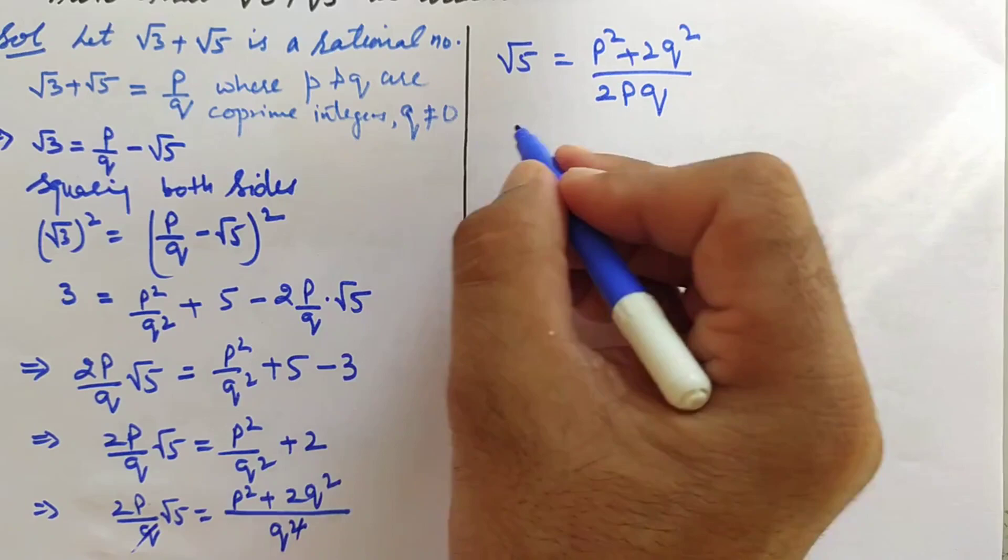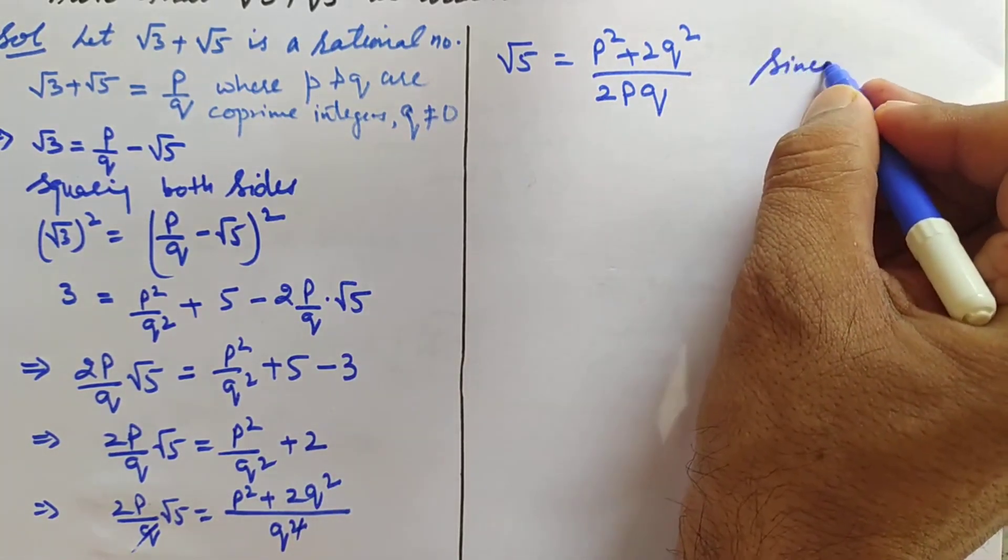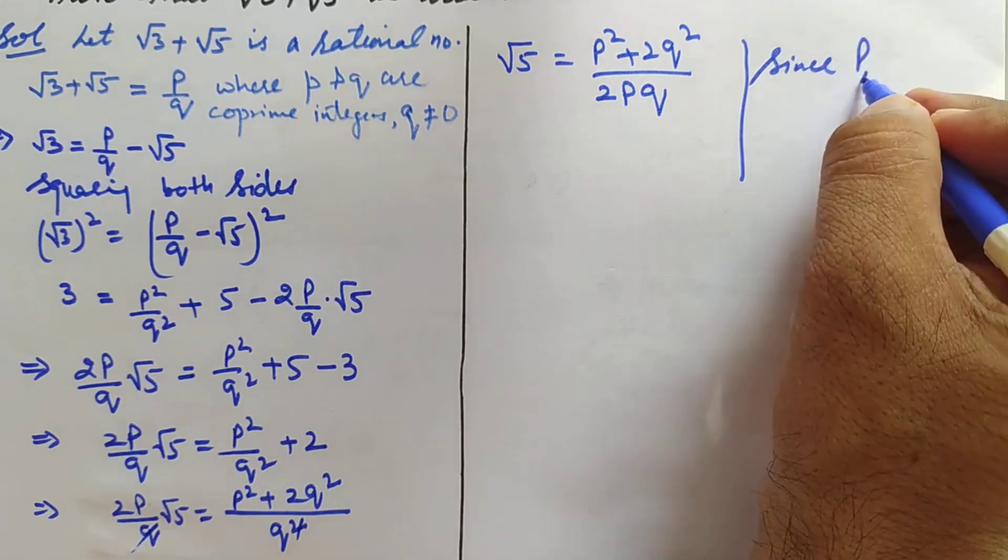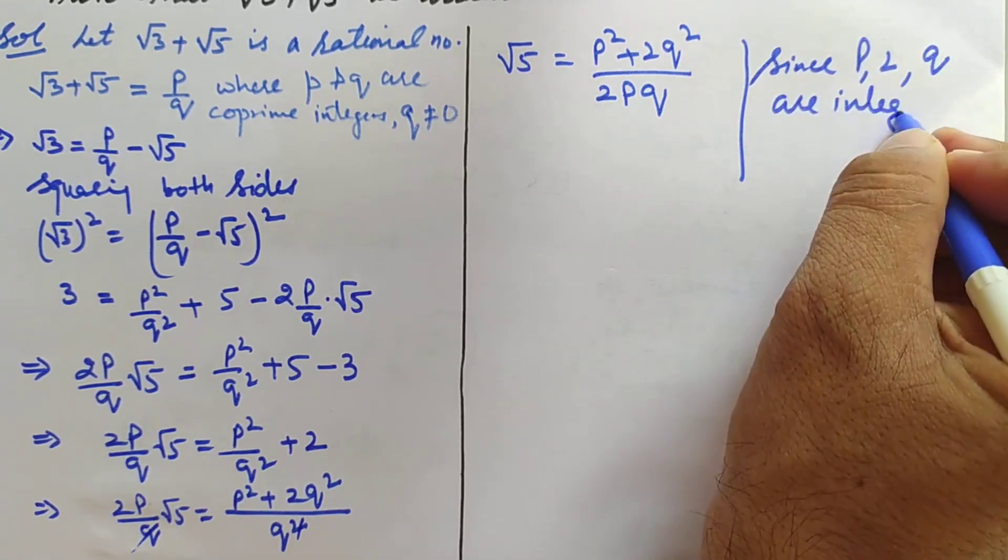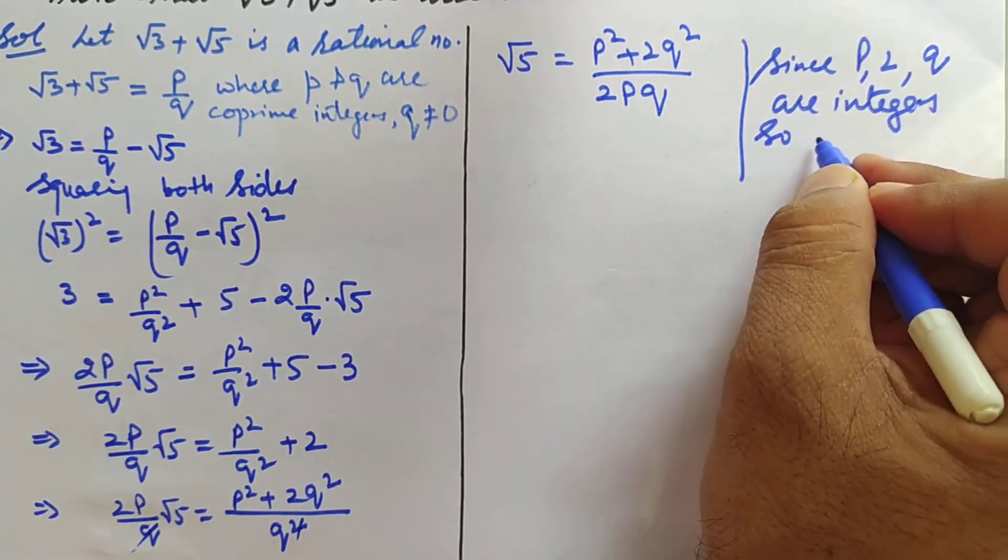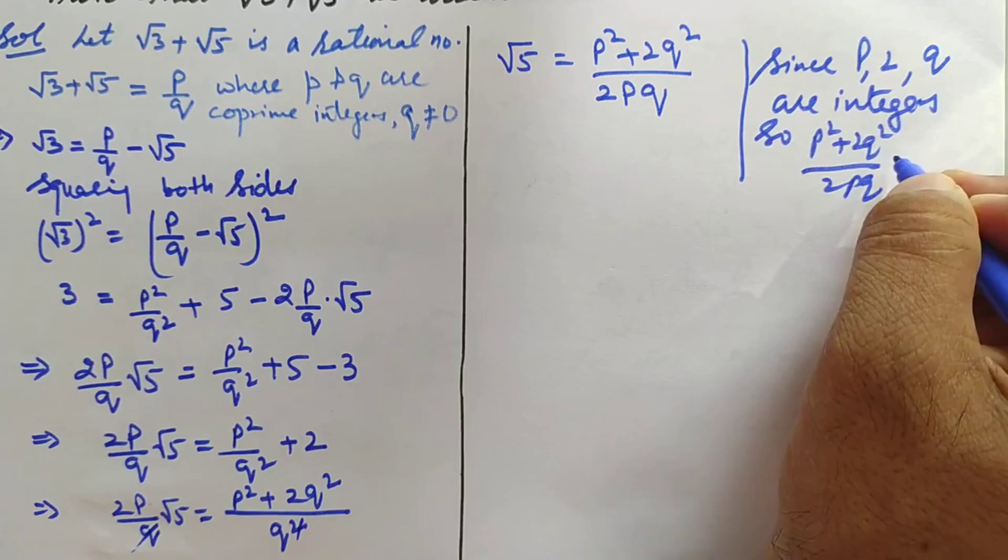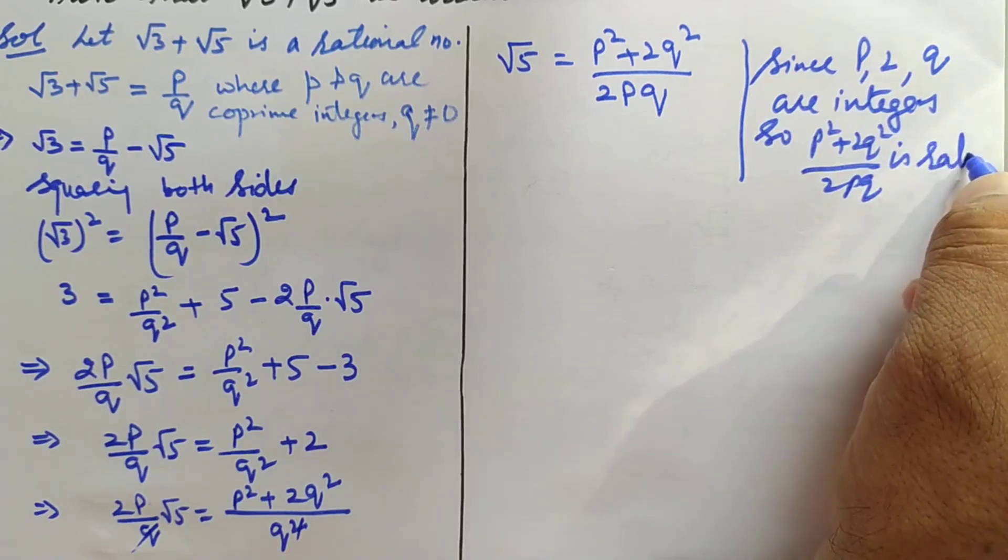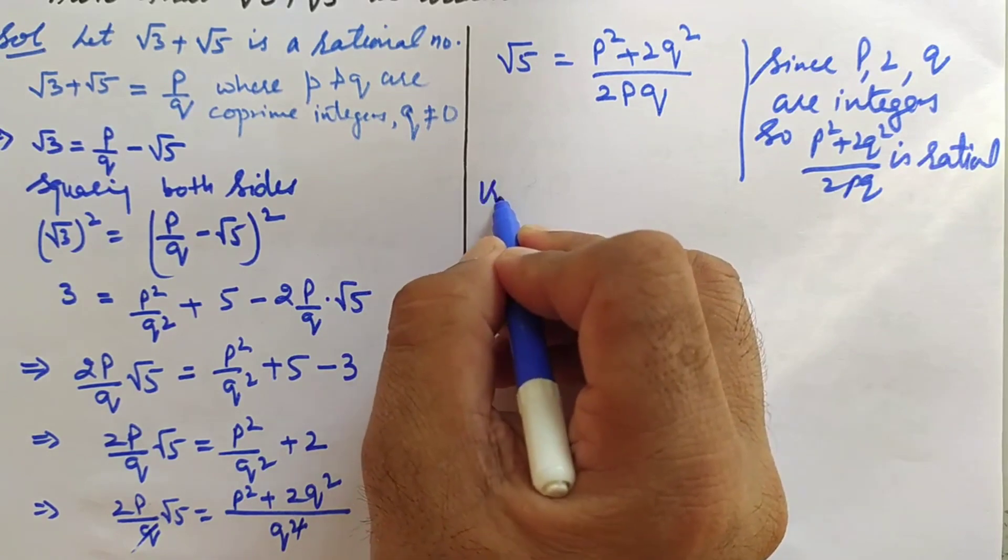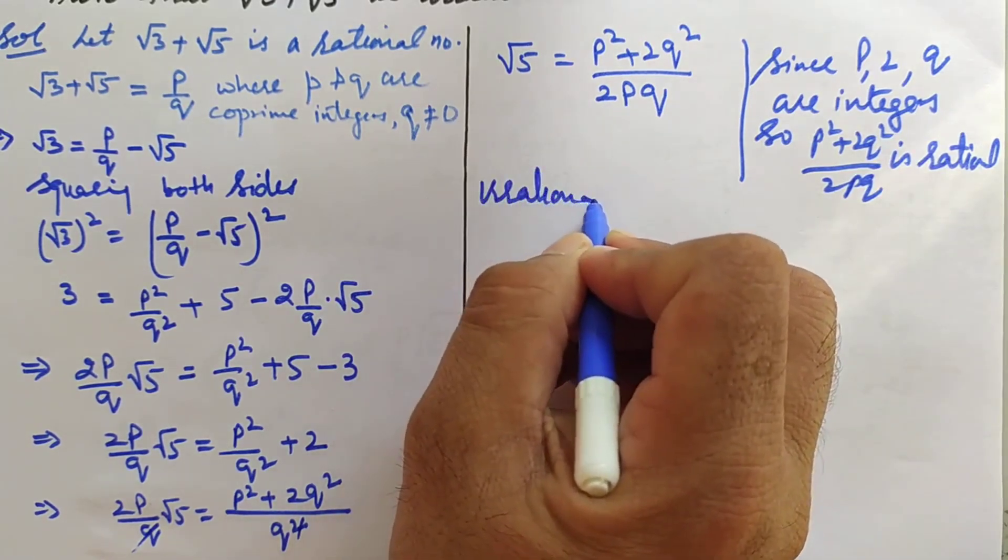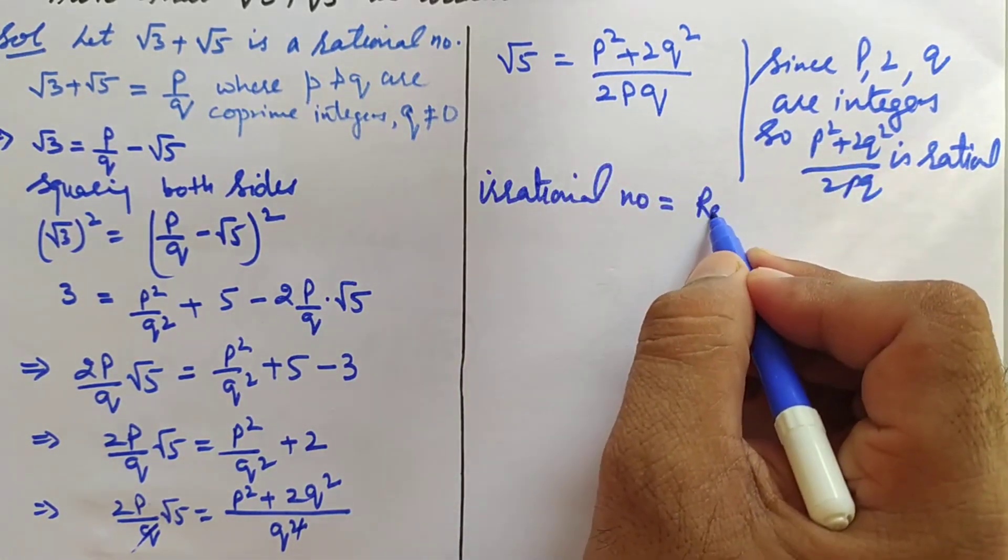Since p and q are integers, (p² + 2q²)/(2pq) is a rational number. But here it equals irrational number √5. From here you can see that irrational number is equal to rational number.